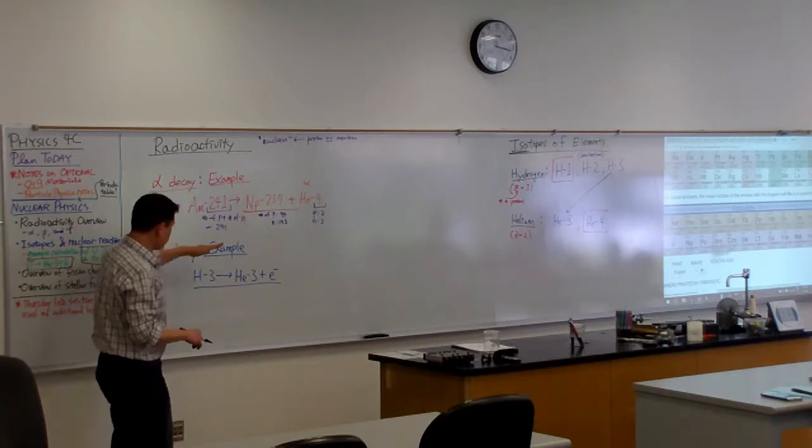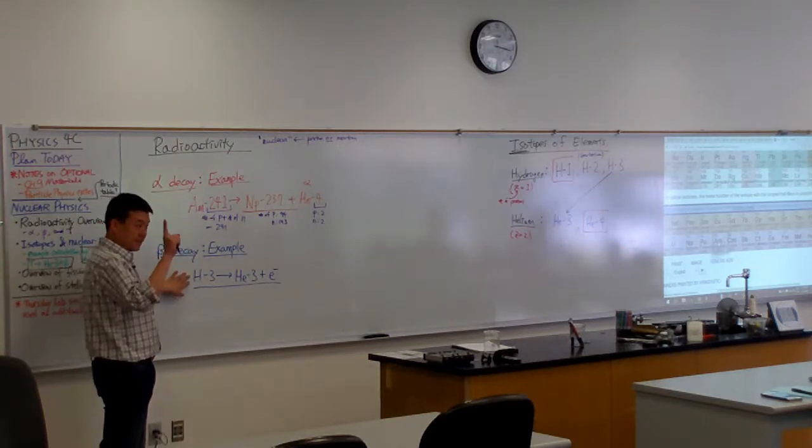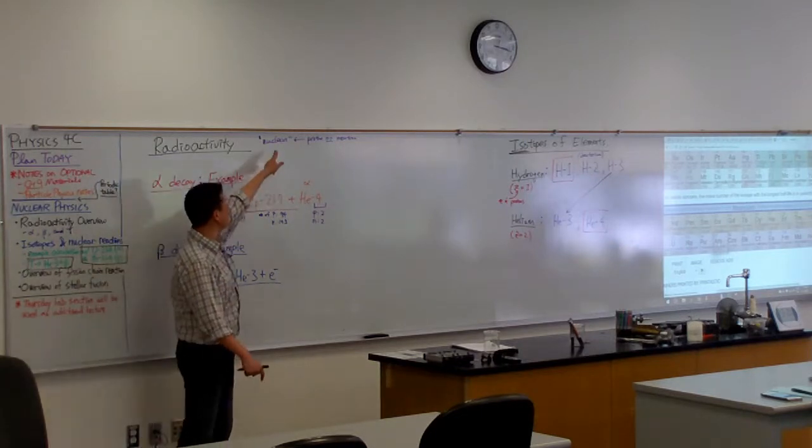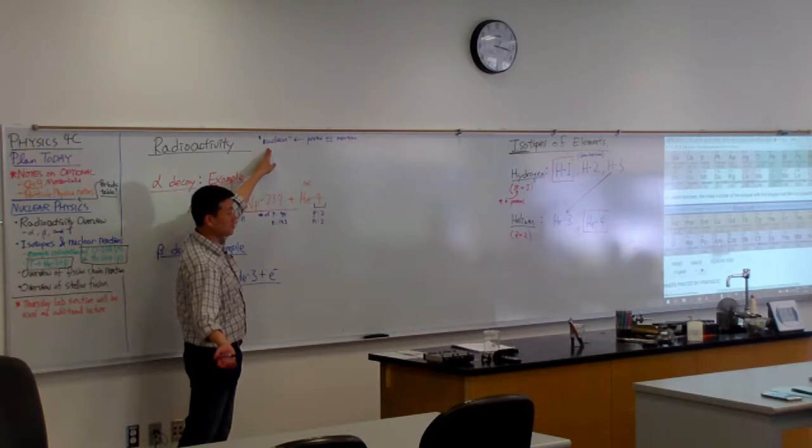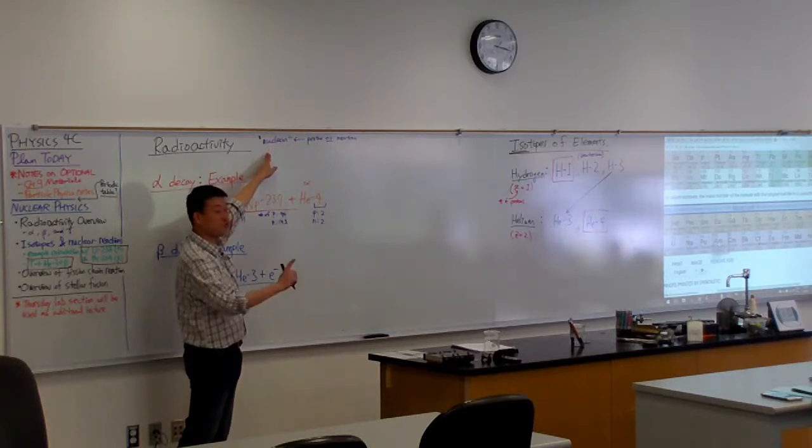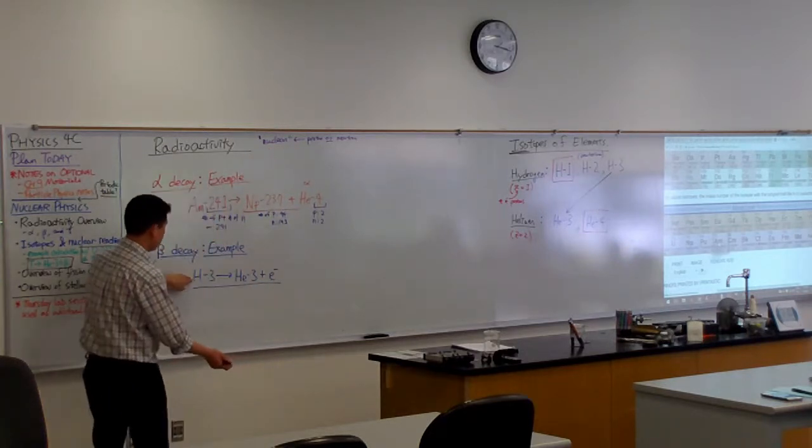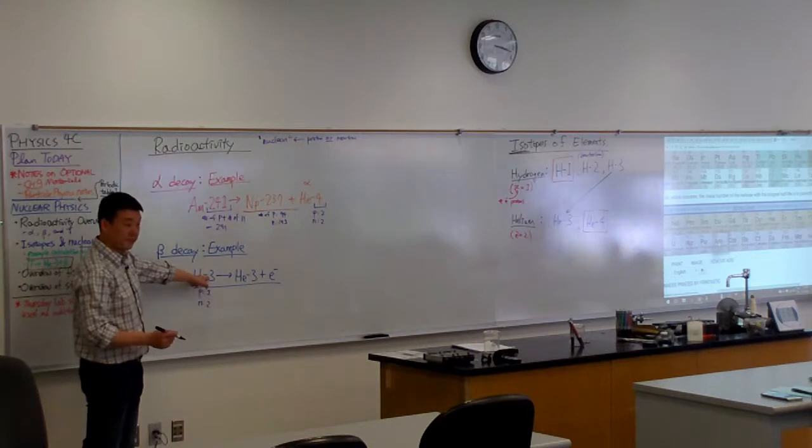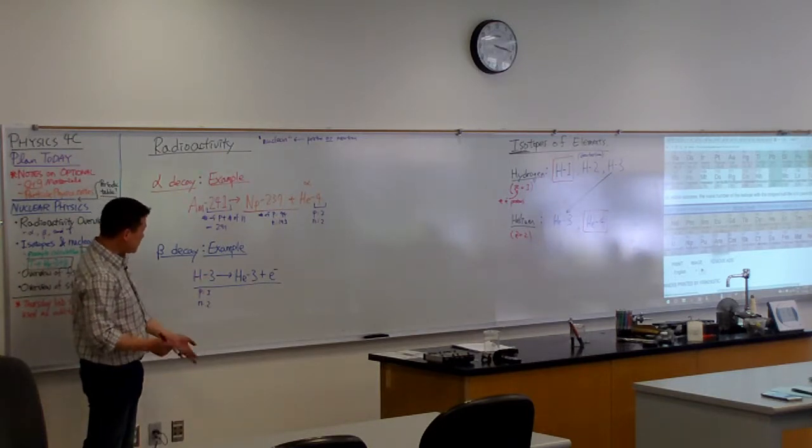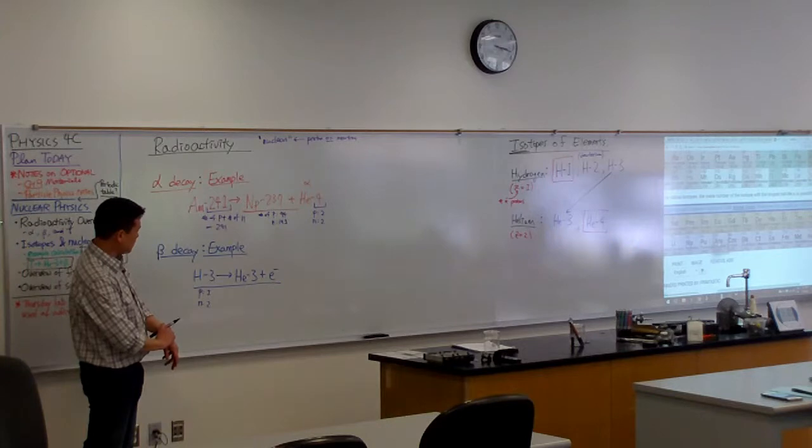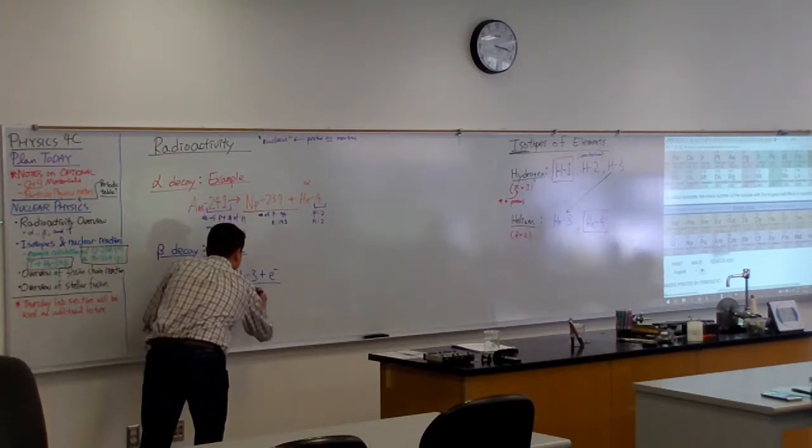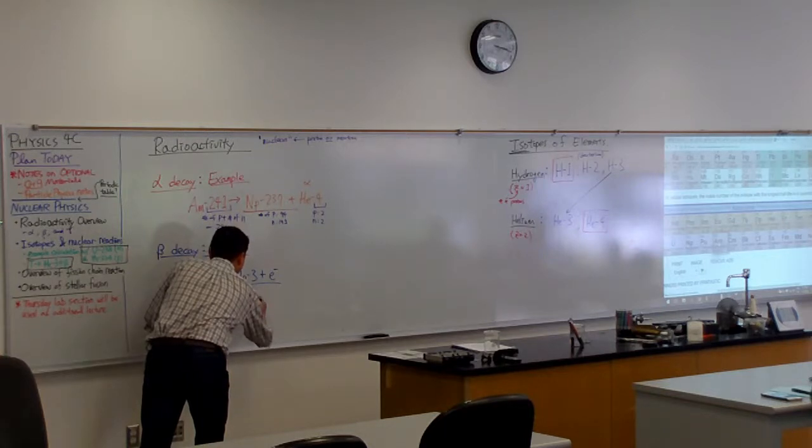So with the beta decay, one interesting thing that's going to happen is that the total number of nucleons won't change, but the total number of protons or neutrons alone will change. So when you look at this, so this says one proton and two neutrons for a total of three. And it decays in a way that it turns into helium-3. So it now has two protons and one neutron.